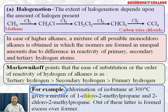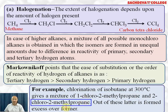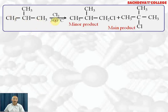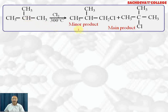Chlorination of isobutane at 300°C gives a mixture of 1-chloro-2-methylpropane and 2-chloro-2-methylpropane. In isobutane, the primary hydrogen is being replaced by Cl to give 1-chloro-2-methylpropane as the minor product. The tertiary hydrogen, attached to the tertiary carbon, is being replaced by Cl to give 2-chloro-2-methylpropane as the major product, because it is more stable.